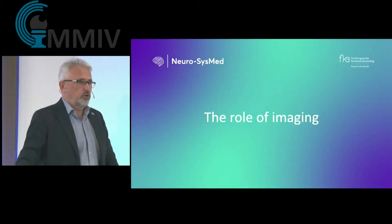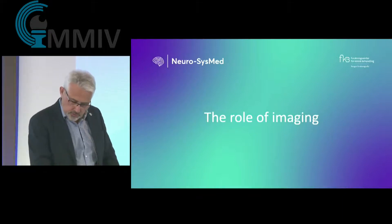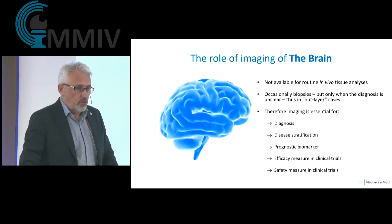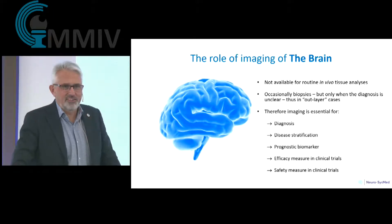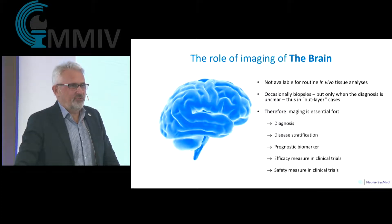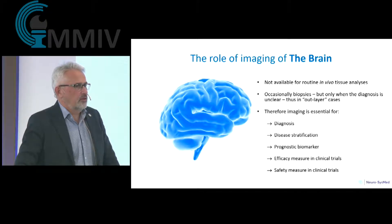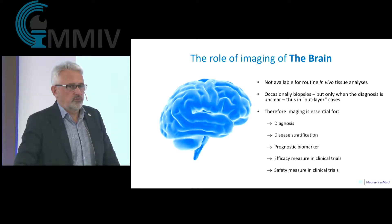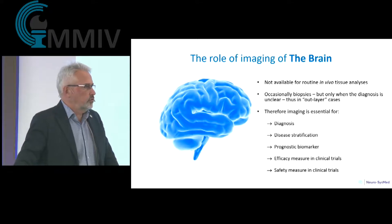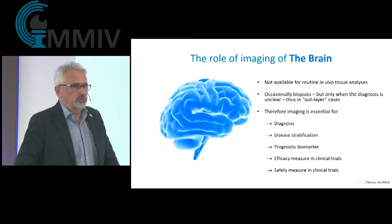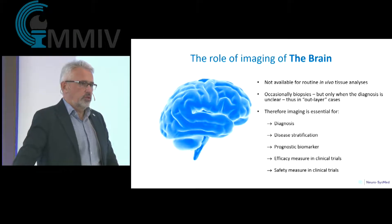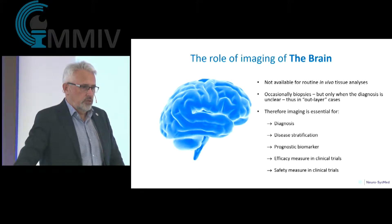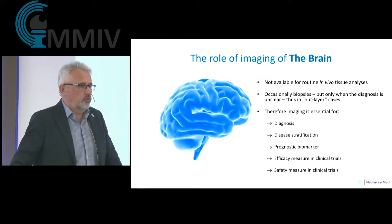What is the role of imaging for our activity and our diseases? What is special for our diseases is that the brain is the most important organ in the body, and it is not available for biopsies in our diseases. Therefore, imaging is very important — both for making the diagnosis, disease stratification, prognostic evaluations, and in clinical trials for efficacy and safety measures.